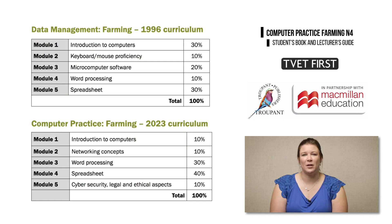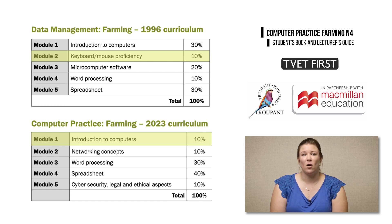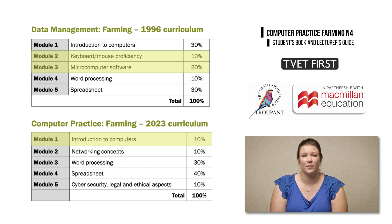Two modules have been restructured. First, the old Module 2 on keyboard and mouse proficiency has been incorporated into Module 1, called Introduction to Computers, and the old sections on proofreading and proofreading symbols have been removed. Second, the section of the old Module 3 on the computer operating system has also been incorporated into Module 1, and all references to MS-DOS and DOS commands have been removed from the syllabus.